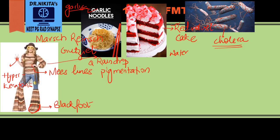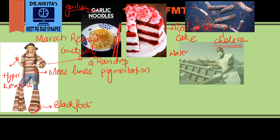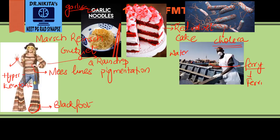She drinks water outside which is contaminated, and gets cholera — the features of arsenic poisoning are like cholera. Her health deteriorates suddenly, and to rescue her, a fairy comes. This fairy represents ferric oxide, which is the antidote for arsenic poisoning.